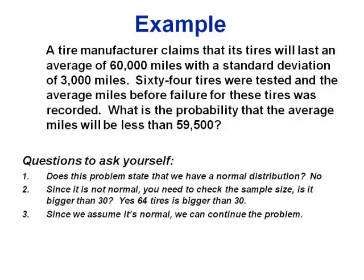Next example: a tire manufacturer claims its tires last an average of 60,000 miles with a standard deviation of 3,000. We test 64 tires. What's the probability the average for those tires is less than 59,500 miles? First, check whether the central limit theorem applies. The problem doesn't state a normal distribution, so we check sample size — 64 is over 30, so we can continue.